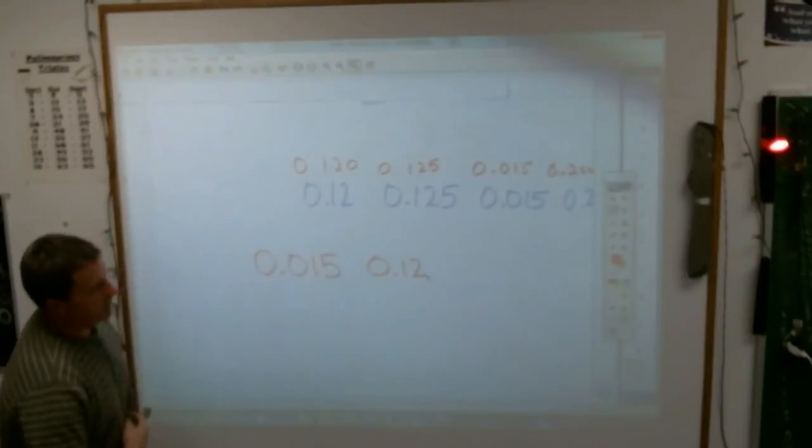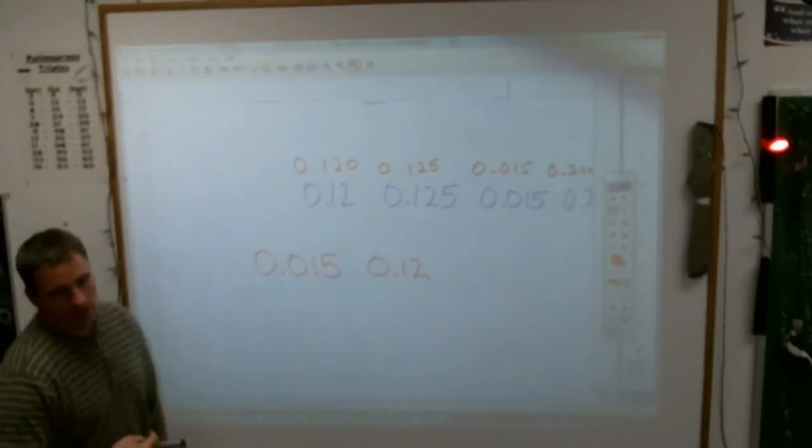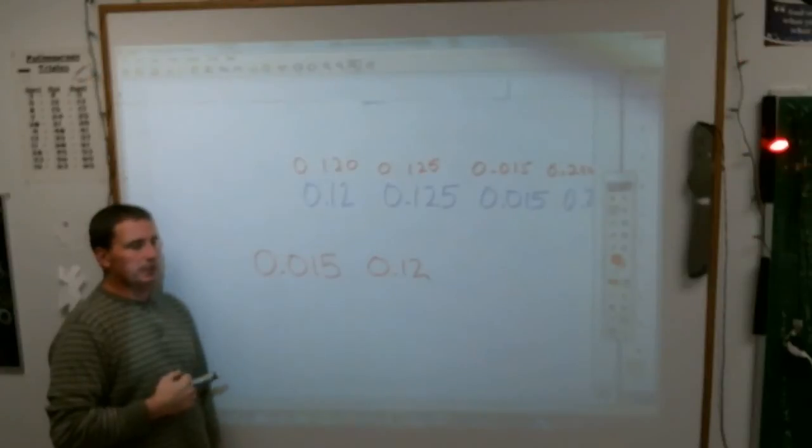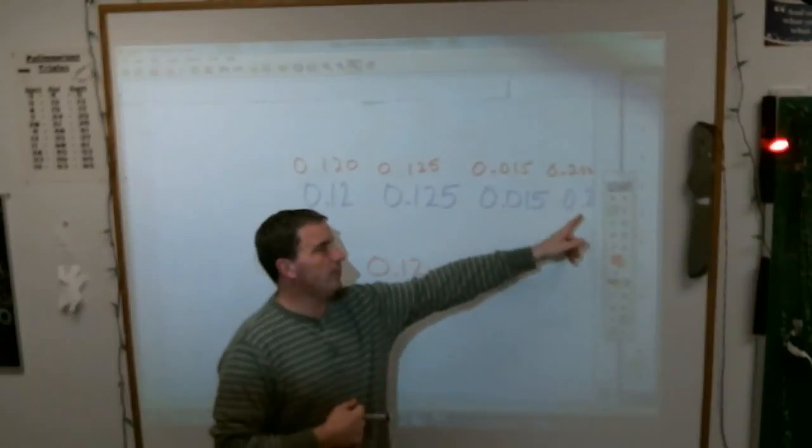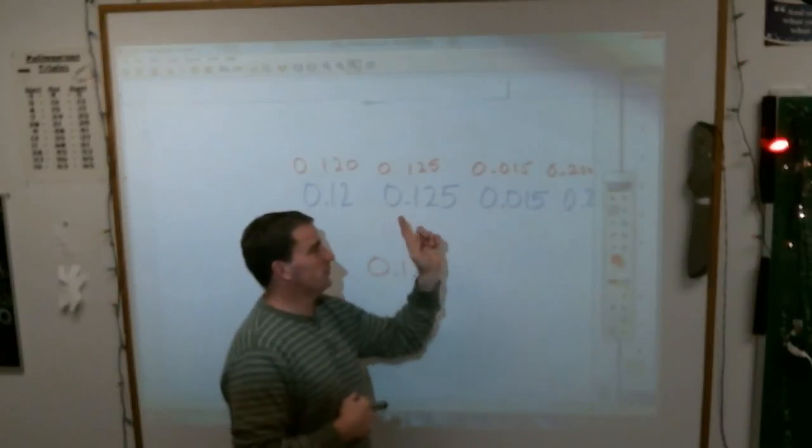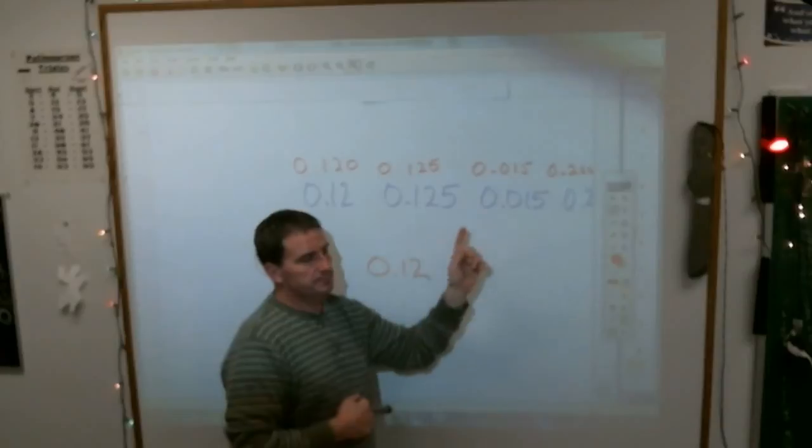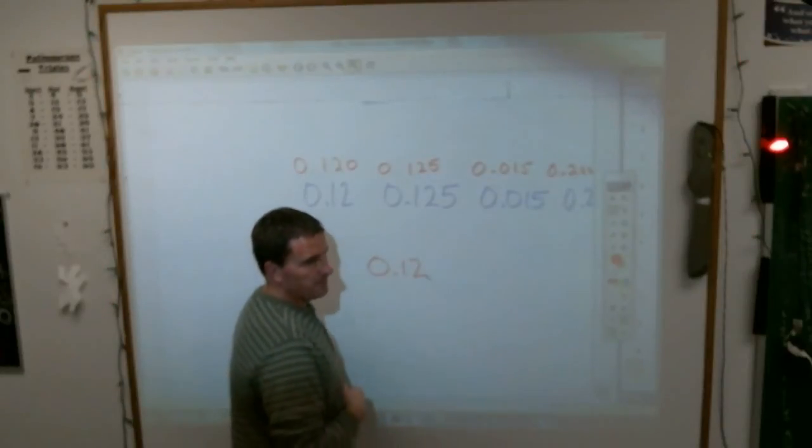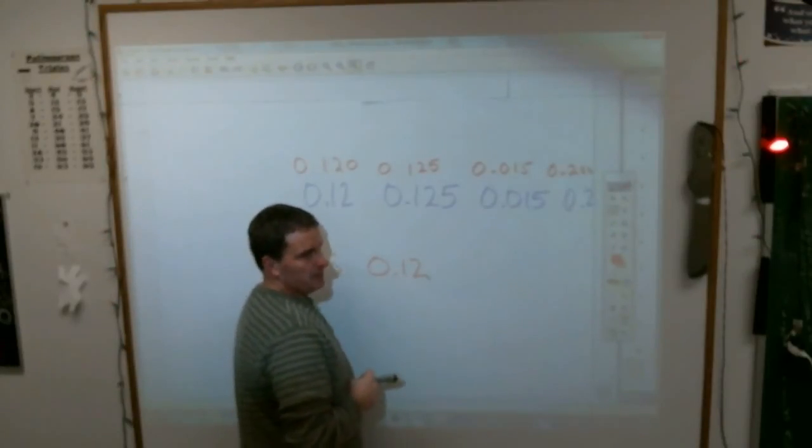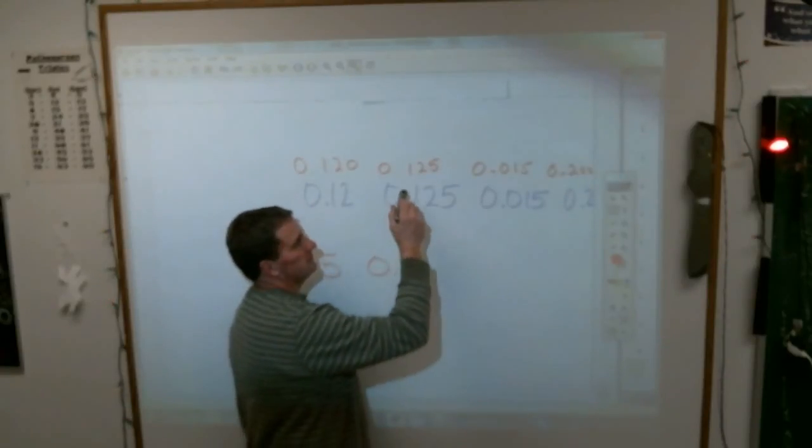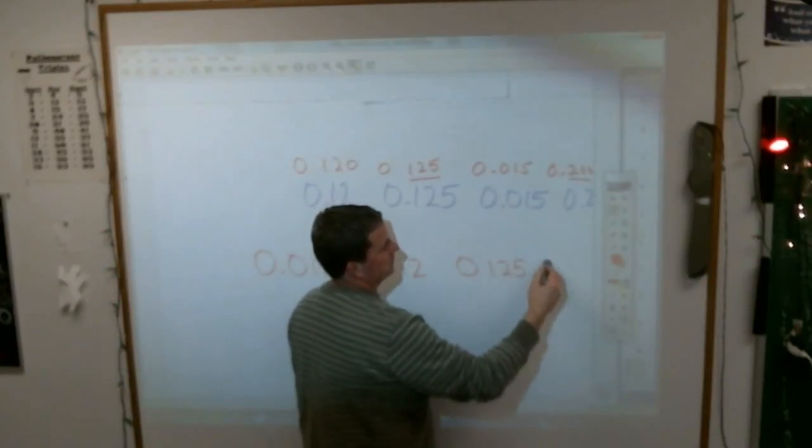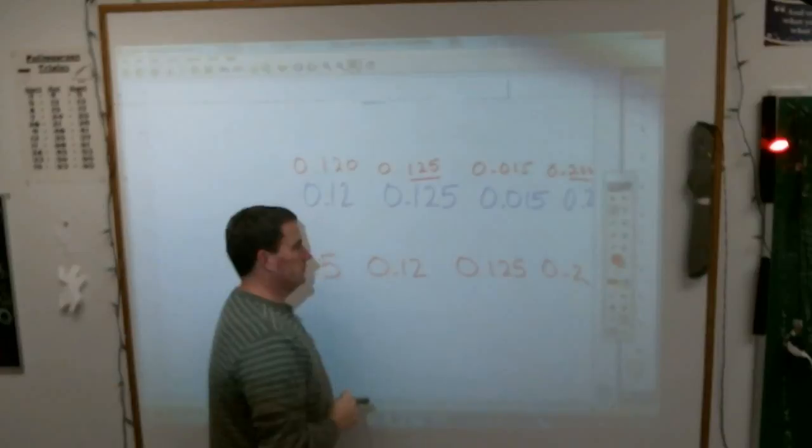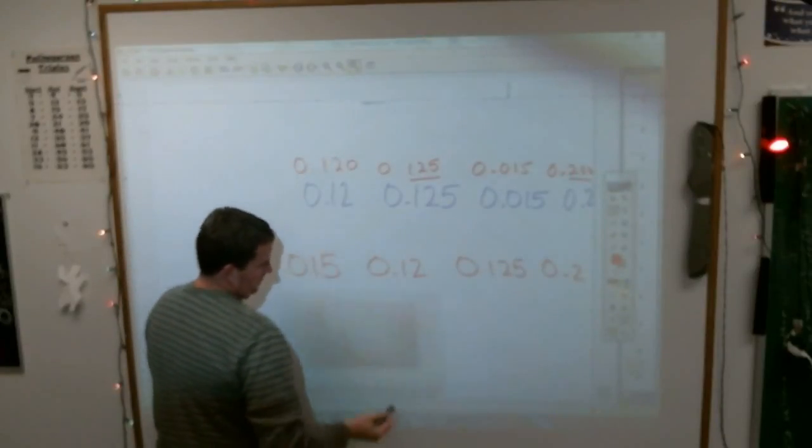Then the next biggest one, what's bigger, 0.125 or 0.2? Which one's bigger, Brooklyn? What's bigger, this one or that one? 0.2 or 0.125? 0.125, is it bigger? Or smaller? 125 or 200? 0.125 and then 0.2. That's it. Thank you.